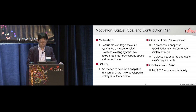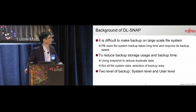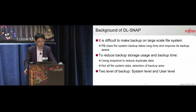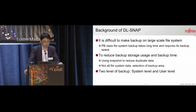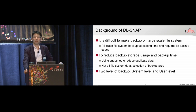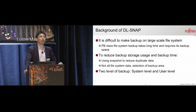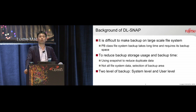Let's talk about the background. It is difficult to make a backup of a large file system. Especially, a petabyte file system backup takes a long time and requires its backup space. There were maybe two kinds of options to reduce backup storage usage and backup time. The first option is using a snapshot to reduce replicated data. The second option is that it doesn't make sense to do a total high-level backup, so a selection of a backup area is the second option.